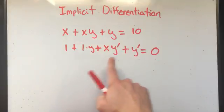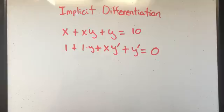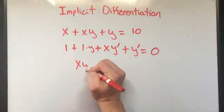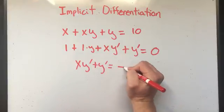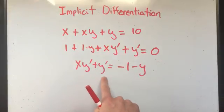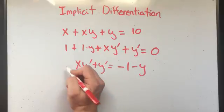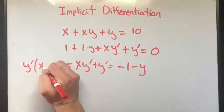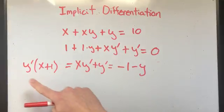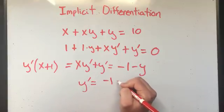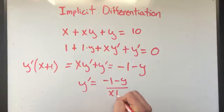Now y prime is the answer — that's what I want to solve for algebraically. So I'm going to subtract 1, I'm going to subtract y. That'll give me xy prime plus y prime equals minus 1 minus y. Now everything on the left side has a y prime, so I can pull out the y prime, make that x plus 1. And now y prime is the answer, so if I divide both sides by x plus 1, I'll have y prime equals this thing. That's the derivative.